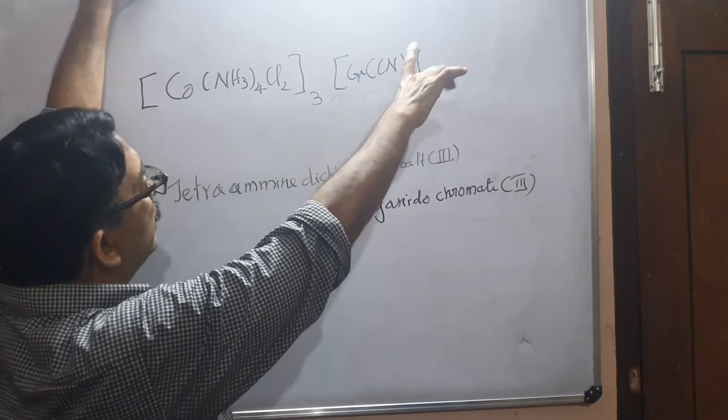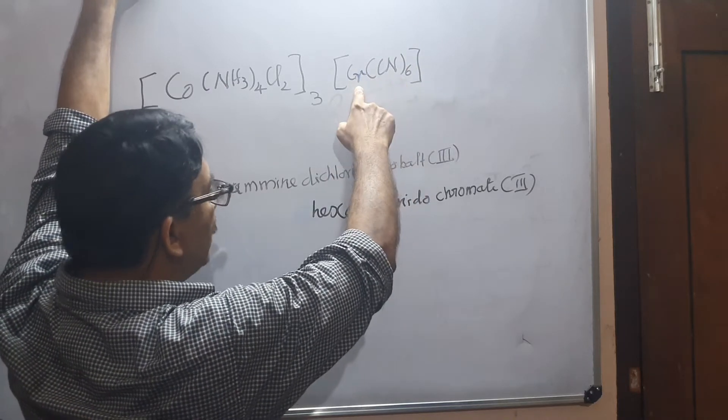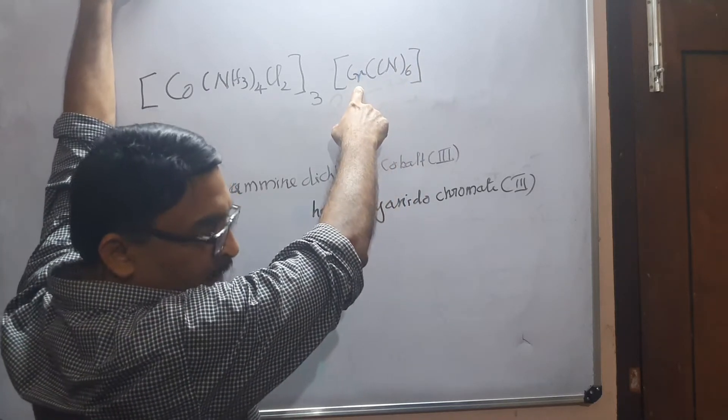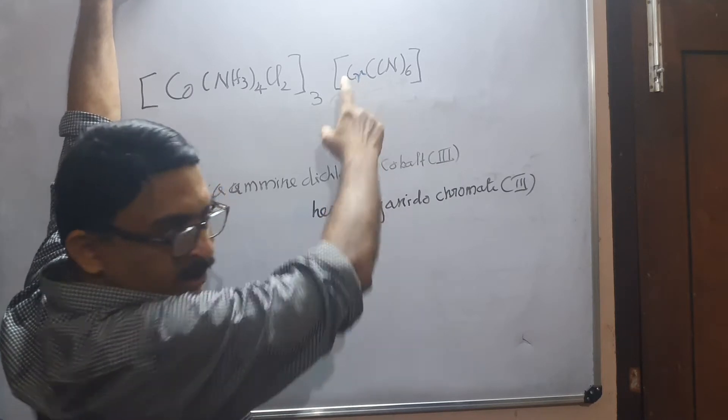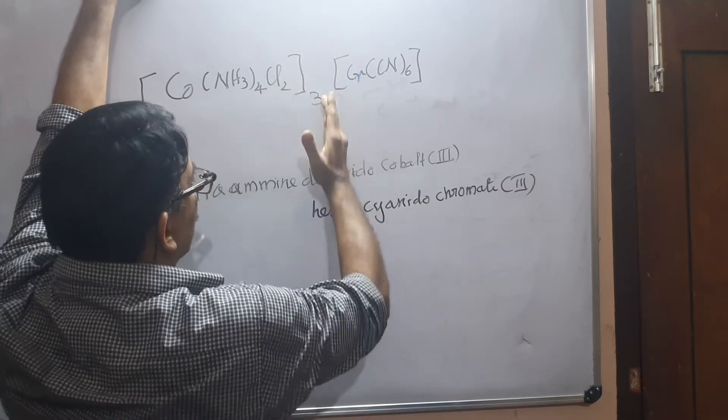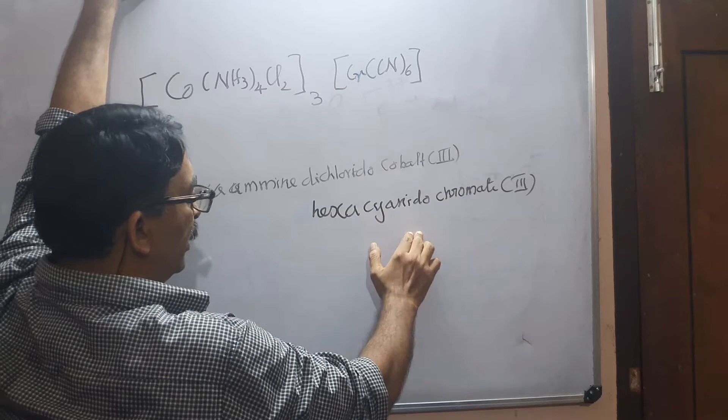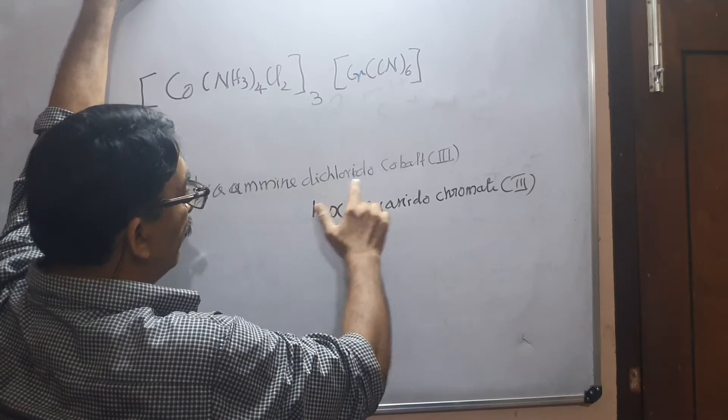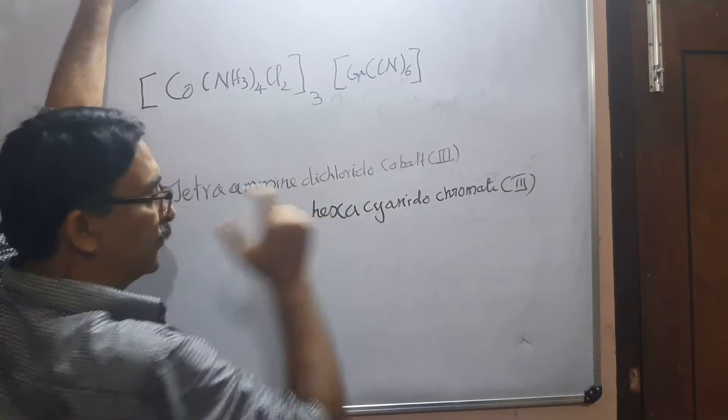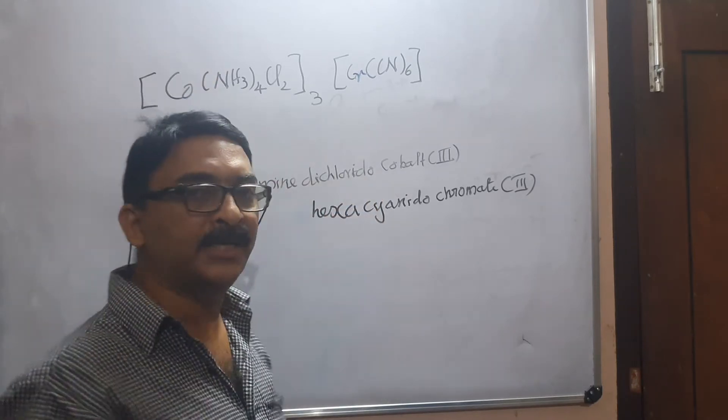Then the anion's name, the element in the modified way like cobaltate, chromate, nickelate. You should leave a space only here, between the cationic name and the anionic name, never in between the names of the ligands.